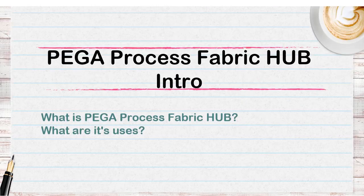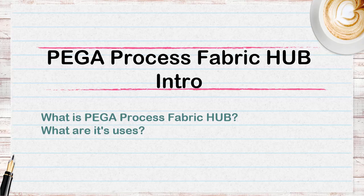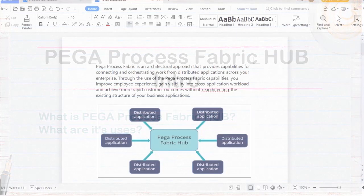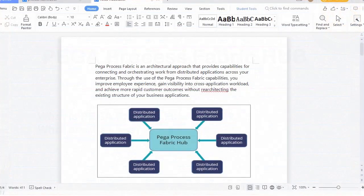Hello guys, hope you are doing good. Welcome back to my channel. Today we are going to discuss a theory topic: Pega Process Fabric Hub. So what is Pega Process Fabric? It is an architectural approach that provides capabilities for connecting and orchestrating work from distributed applications across your enterprise.